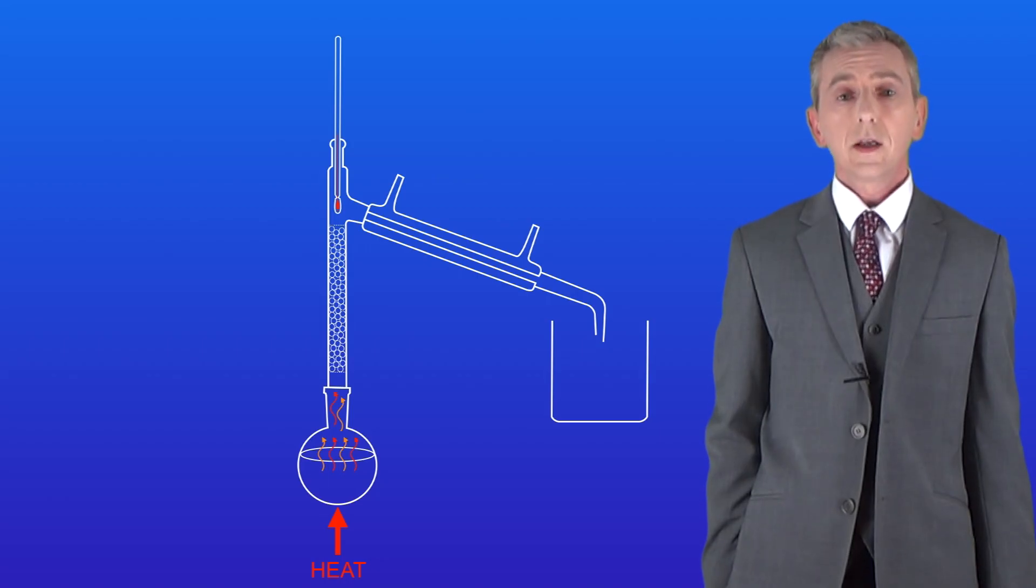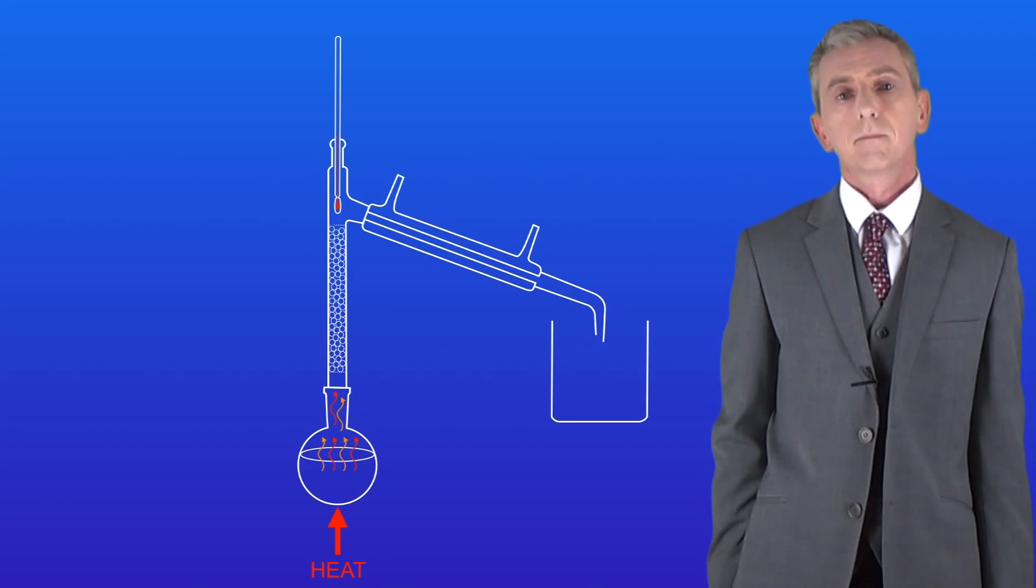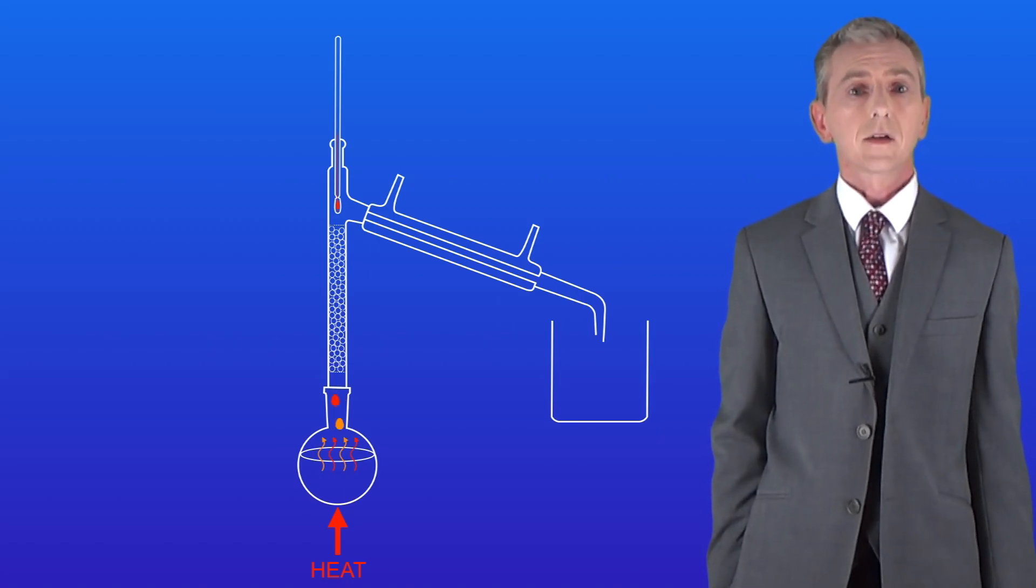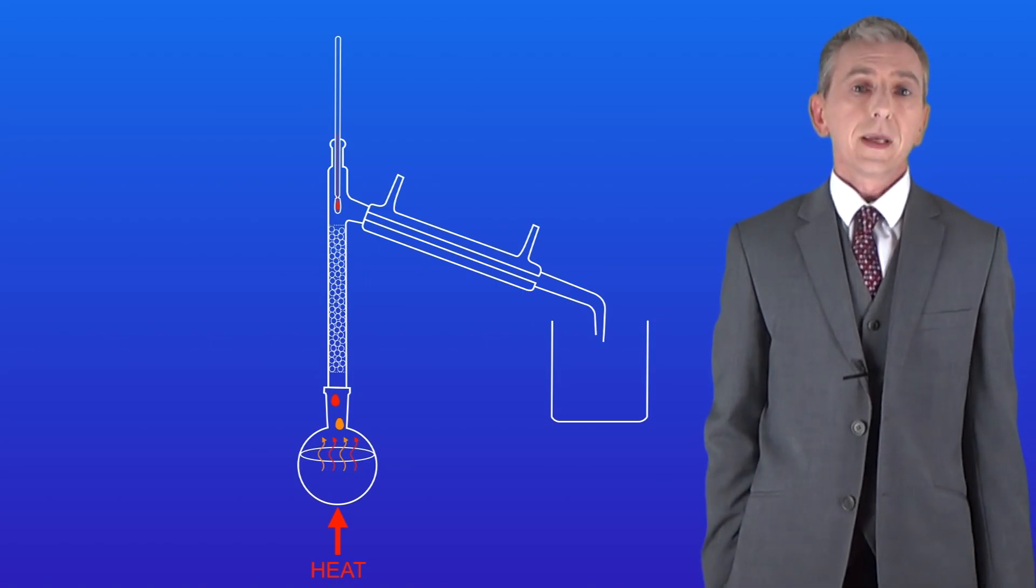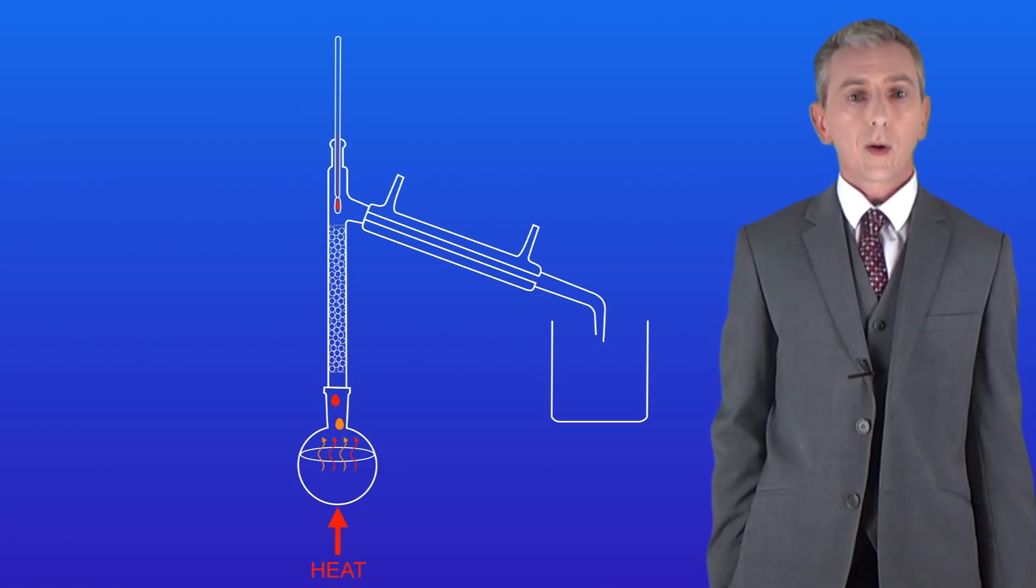So we've got a mixture of two different vapors making their way into the fractionating column. When the vapors hit the fractionating column they condense and drip back into the flask where the liquids evaporate again. This repeated evaporation and condensation increases the amount of the lower boiling point chemical in the fractionating column.